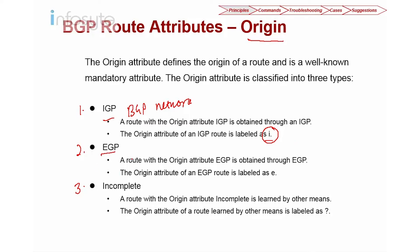EGP is quite an old protocol — it's generated by the EGP protocol and the origin attribute shows as 'E'. Nowadays we seldom see origin EGP. The second most common is incomplete, shown as a question mark '?', which is used when you use the import statement — importing from direct or other routing protocols such as RIP, OSPF, or ISIS. A route with origin attribute incomplete means it was learned by other means.